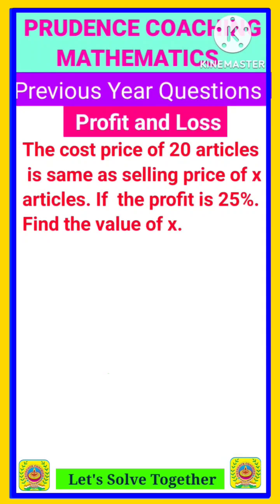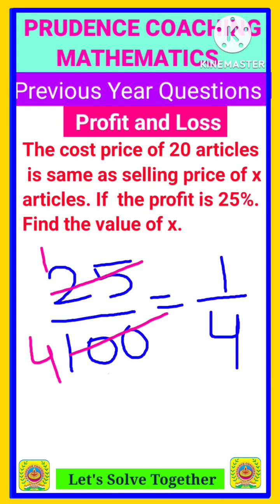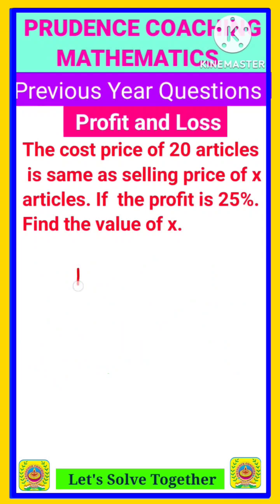That means you're going to find the value of x. So here profit is given to be 25%. Do you know the fraction value of 25%? Yes, you can directly calculate it by 25 by 100, but it is better if you remember some of the fraction values. So here 25% means 1 by 4.